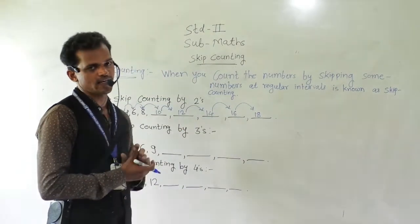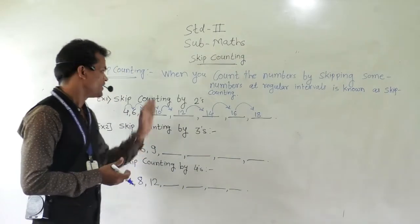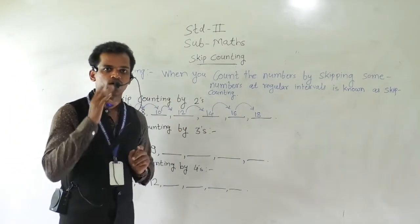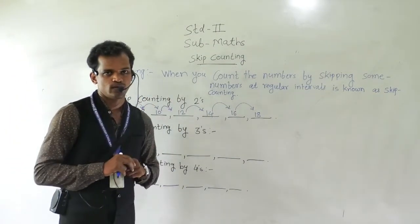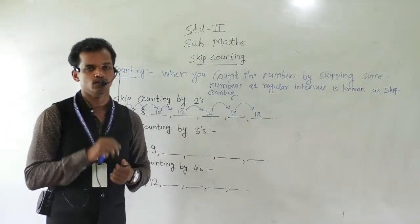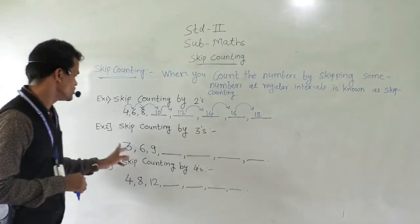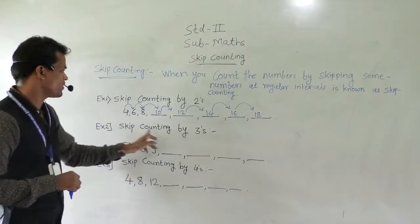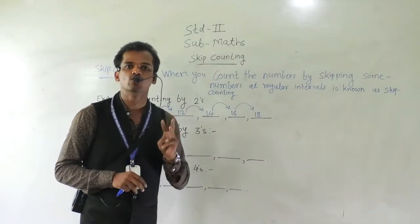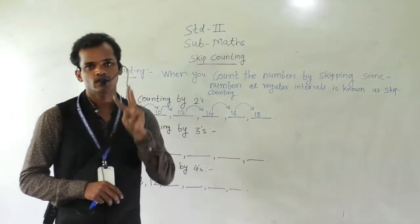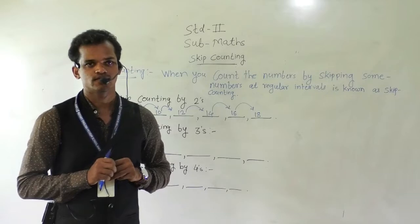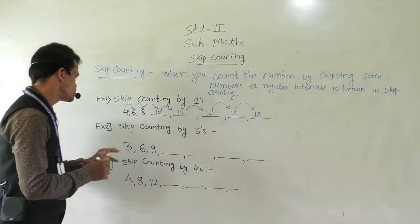Now we will see the next example. In this example we have skipped 2. Now in the next example we will use 3 numbers. We are skip counting by 3's. Every time you have to skip 3 numbers and write the next number.